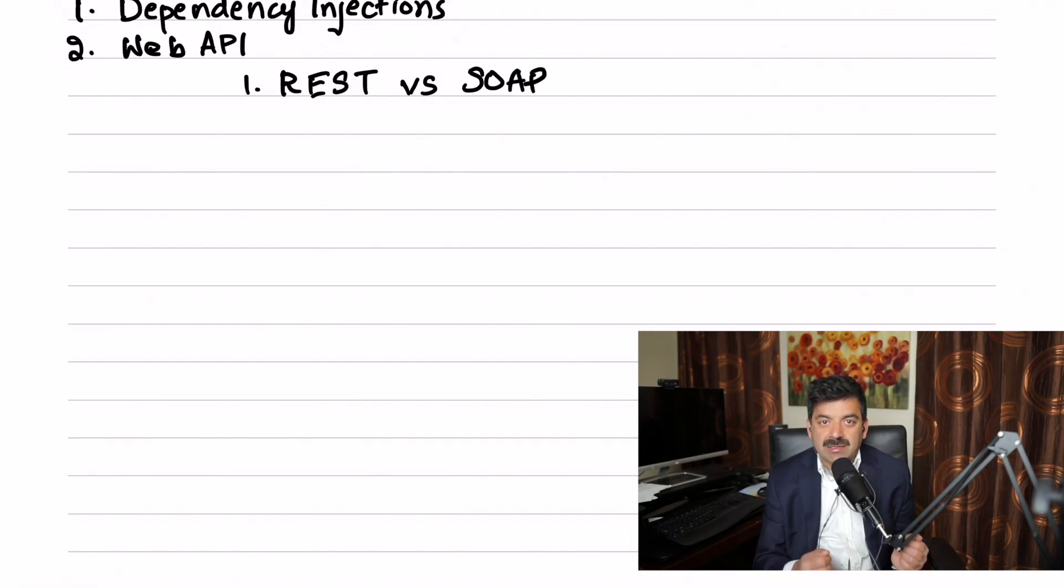The benefit is it creates lightly coupled architecture. You can write unit tests for your business layer or data access layer independent of other layers. He may ask you what are the different scopes in ASP.NET Core dependency injection. There are three scopes: one is scoped, one is transient, one is singleton.